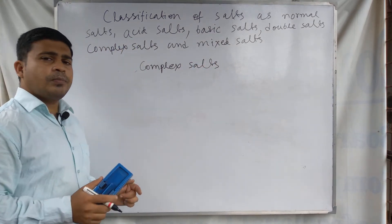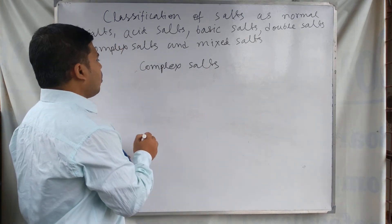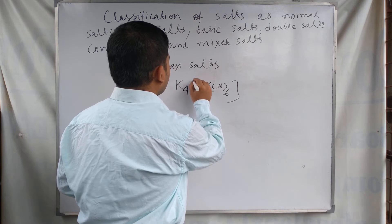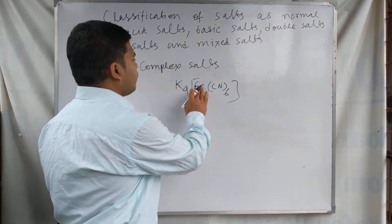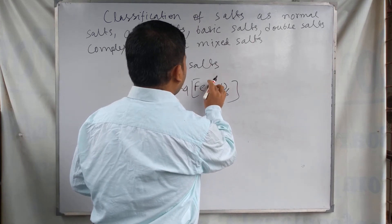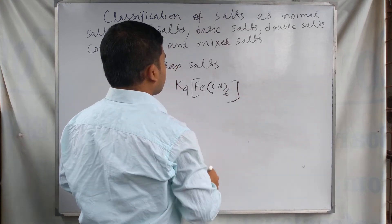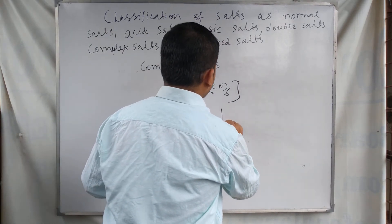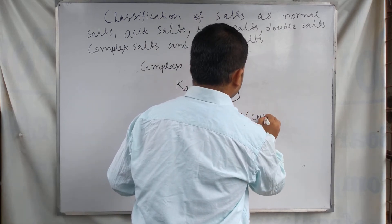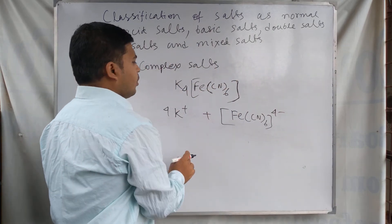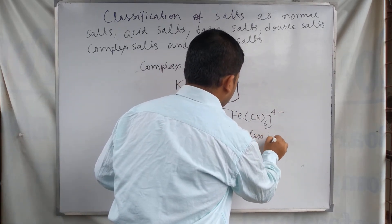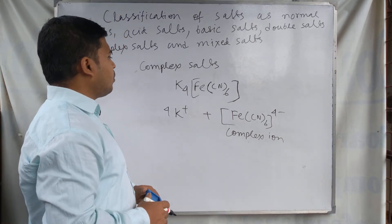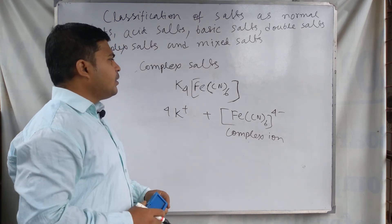The next type is complex salts. Complex salts are formed similarly to double salts. An example of a complex salt is K4[Fe(CN)6]. Its IUPAC name is potassium hexacyanoferrate(II). In this salt there are four potassium ions as the simple counter ions, and [Fe(CN)6]⁴⁻ is the complex ion. This is called a complex salt.